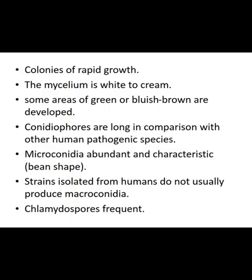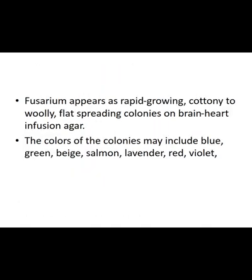Colonies of Fusarium show rapid growth. The mycelium is white to cream, with some areas of green or bluish-brown. Conidiophores are long compared to other species. Microconidia are prominent. Strains isolated from humans do not usually produce macroconidia — only microconidia are produced. The colony is cottony to woolly, flat, and spreading. Colony color may be versicolor — blue, green, or beige.